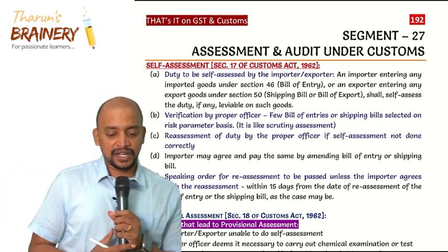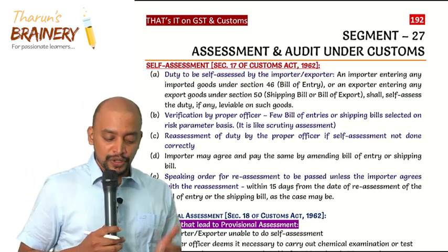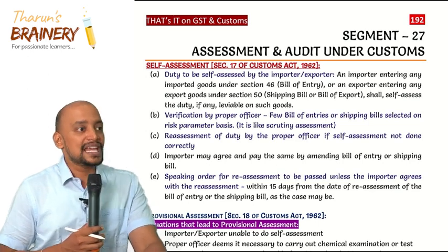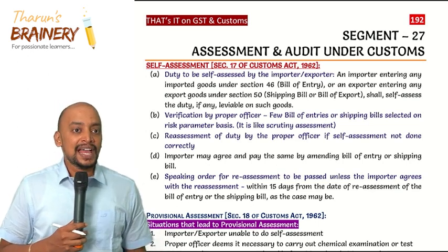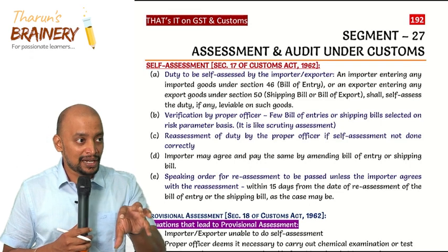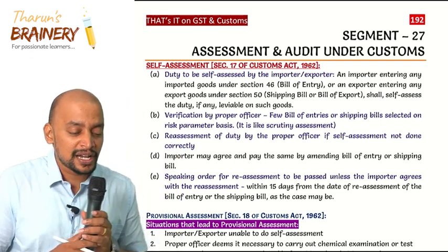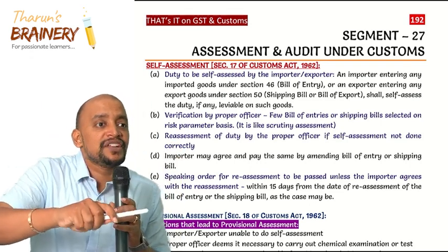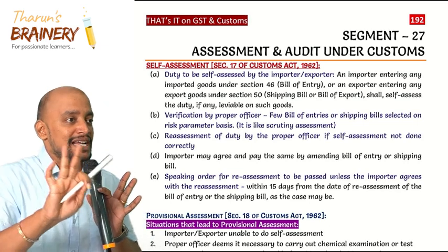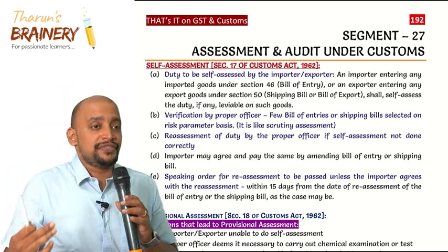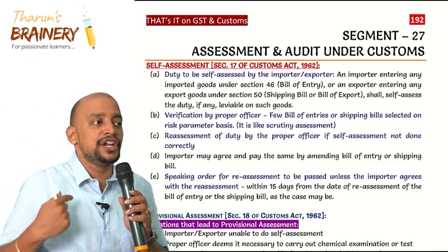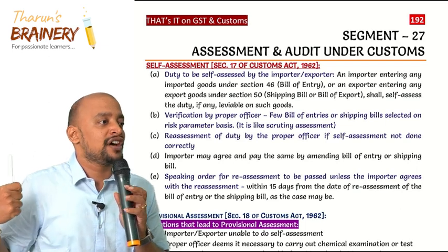Self-assessment applies when an importer or exporter knows how much customs duty they are required to pay. They assess the customs duty payable and file the bill of entry or shipping bill. This is taken up for verification by the customs officer. If everything is proper, the assessment is completed; otherwise the proper officer will do the reassessment, and that reassessed duty needs to be paid or the party can go for appeal.